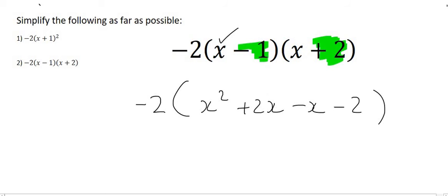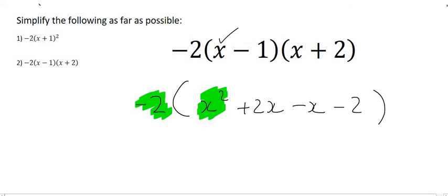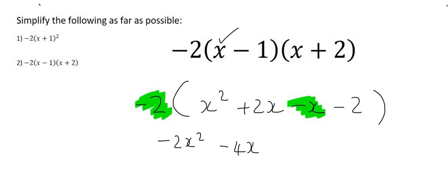Now in the next step we will multiply this minus 2 into each part. So minus 2 times by x squared is negative 2x squared. Minus 2 times by positive 2x is negative 4x. Minus 2 times by minus x is going to give us positive 2x. And lastly minus 2 times minus 2 is going to give us positive 4.